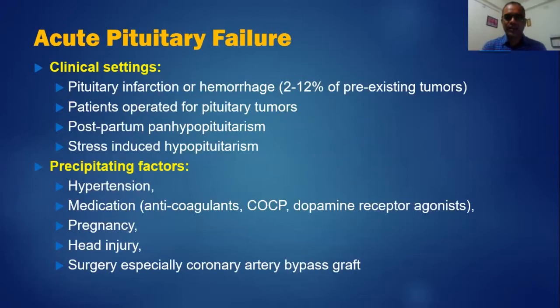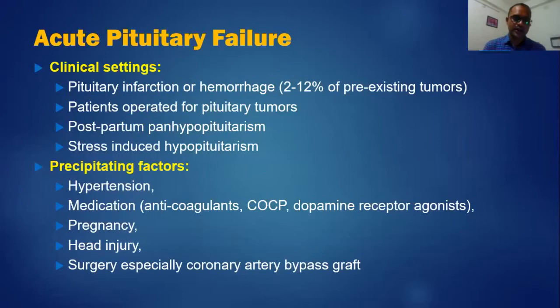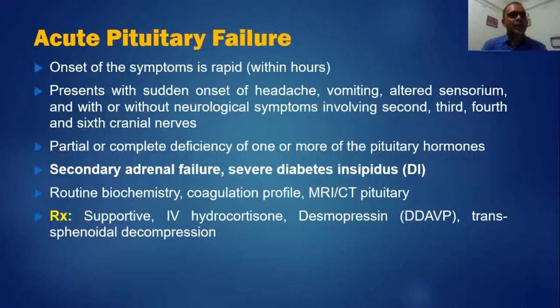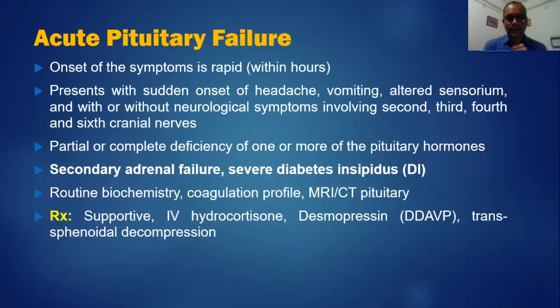Acute pituitary failure is very rare. It occurs due to pituitary infarction or hemorrhage in a pre-existing pituitary tumor, postoperative hypopituitarism, postpartum hypopituitarism (Sheehan's syndrome), stress-induced hypopituitarism, or from precipitating factors such as hypertension, anticoagulants, pregnancy, head injury, or coronary artery bypass graft surgery. Onset is rapid — usually within hours — with severe sudden-onset headache, vomiting, altered sensorium, and neurological symptoms involving cranial nerves. Partial or complete deficiency of one or more pituitary hormones is common, most commonly adrenal deficiency and severe diabetes insipidus due to ADH deficiency. MRI or CT scan of the pituitary is needed to confirm diagnosis.